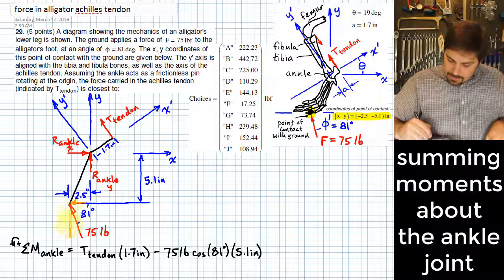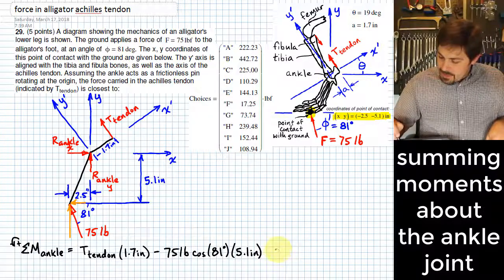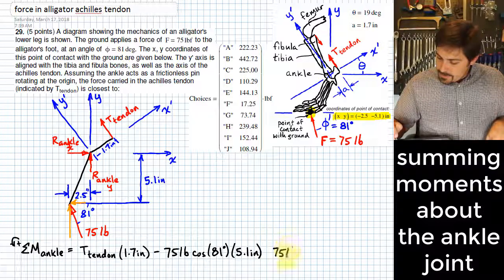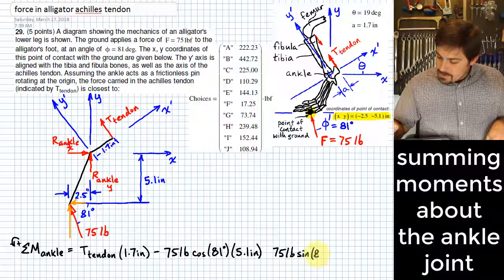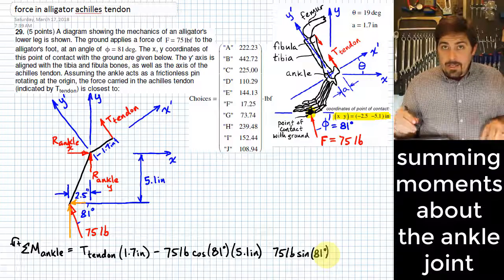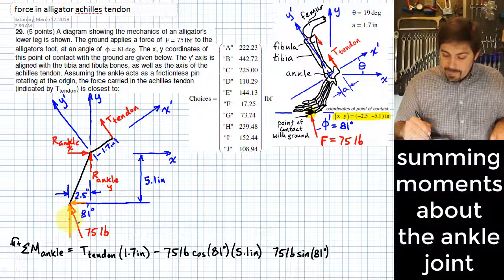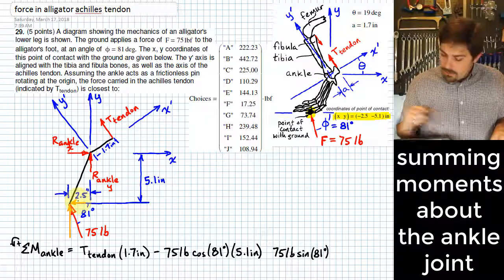Next, we want to look at this vertical component. To get that magnitude of that vertical component, we need to take 75 pounds times the sine of 81 degrees, and take that and multiply it by how far it is from the line of action of that component relative to the ankle joint, and that would be this 2.5 inches.